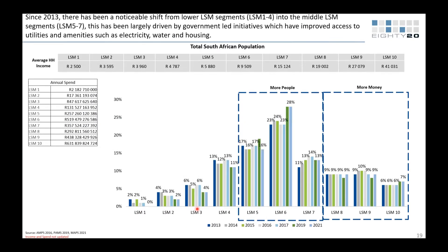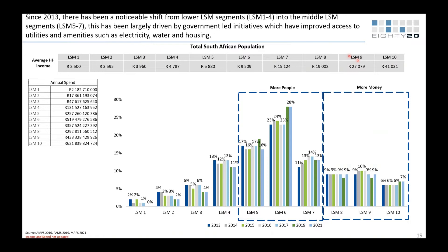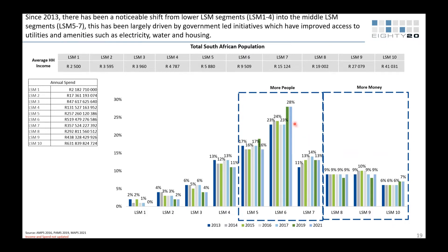If you're looking at LSM as a measure, here's where all your people are in South Africa, but here's where all your money is. LSM 10 income is getting on twice as high as LSM 9. Looking at the percentage in each LSM band from 2013 to 2021, what's interesting is there's almost no difference between 2019 and 2021. The drop in lower LSMs should not be interpreted as things getting better — it's just easier to get into higher LSM categories.